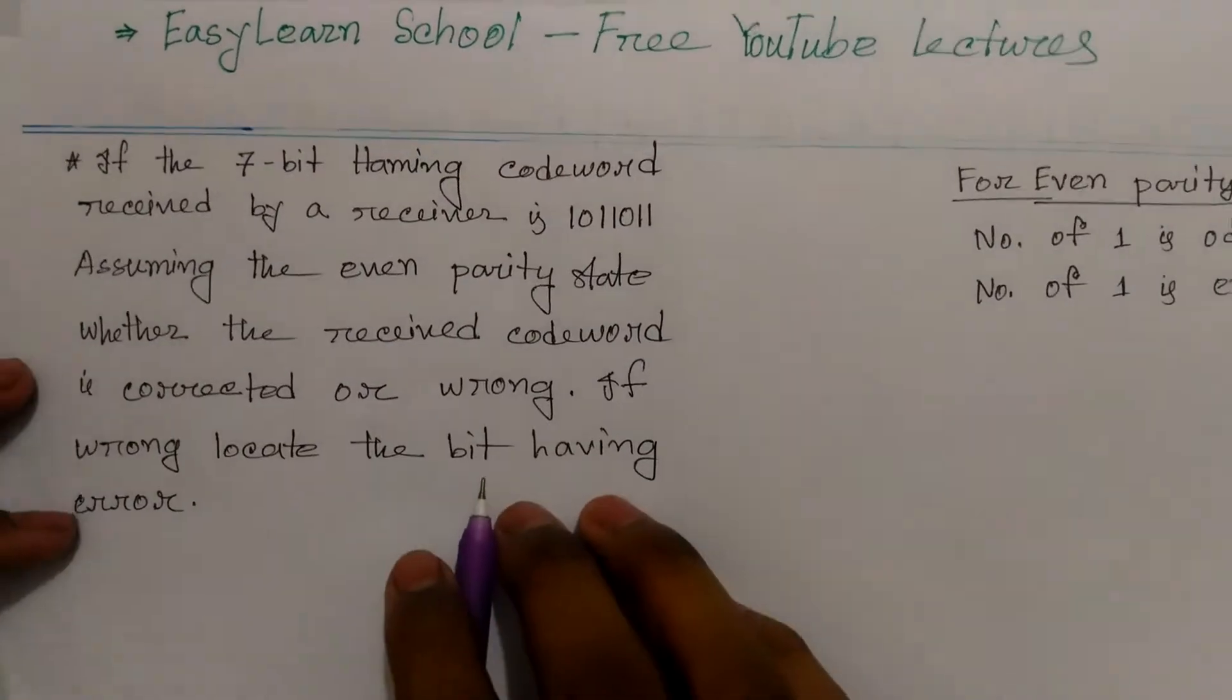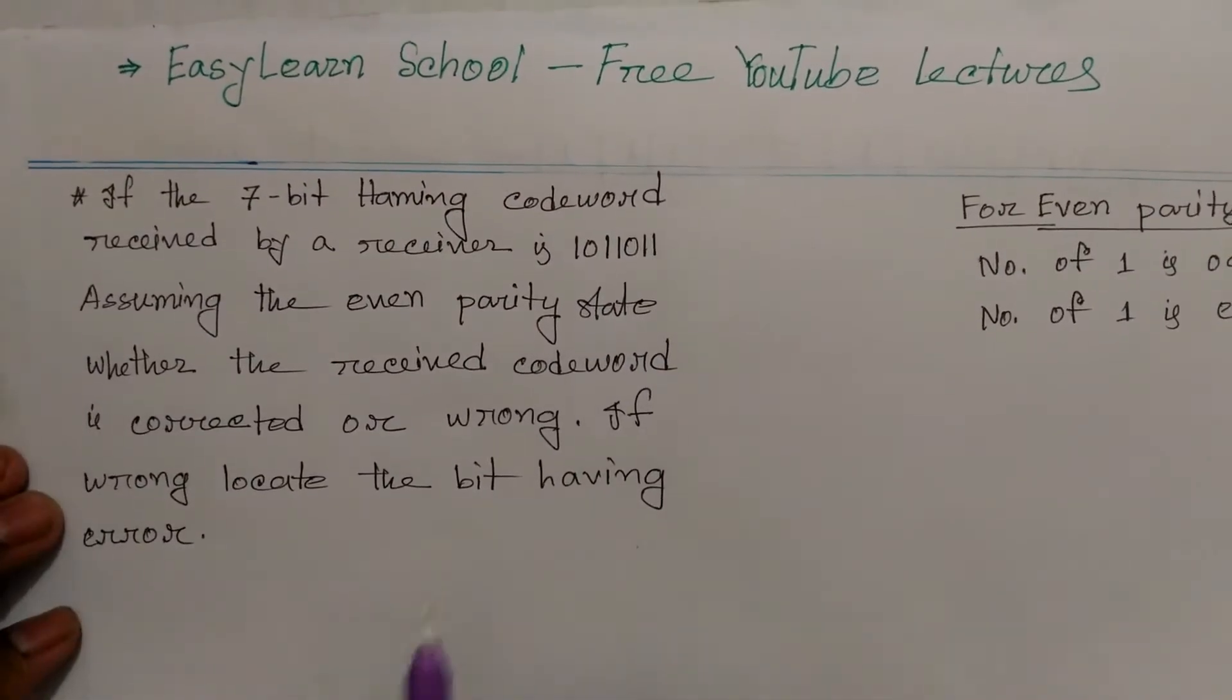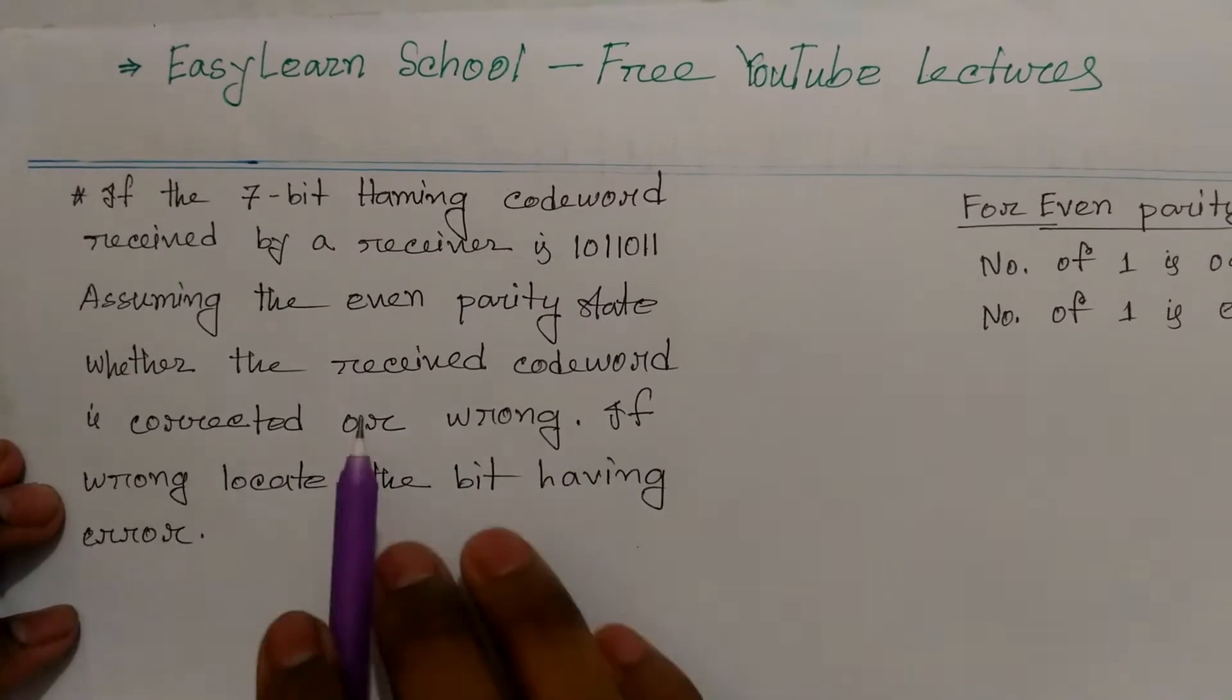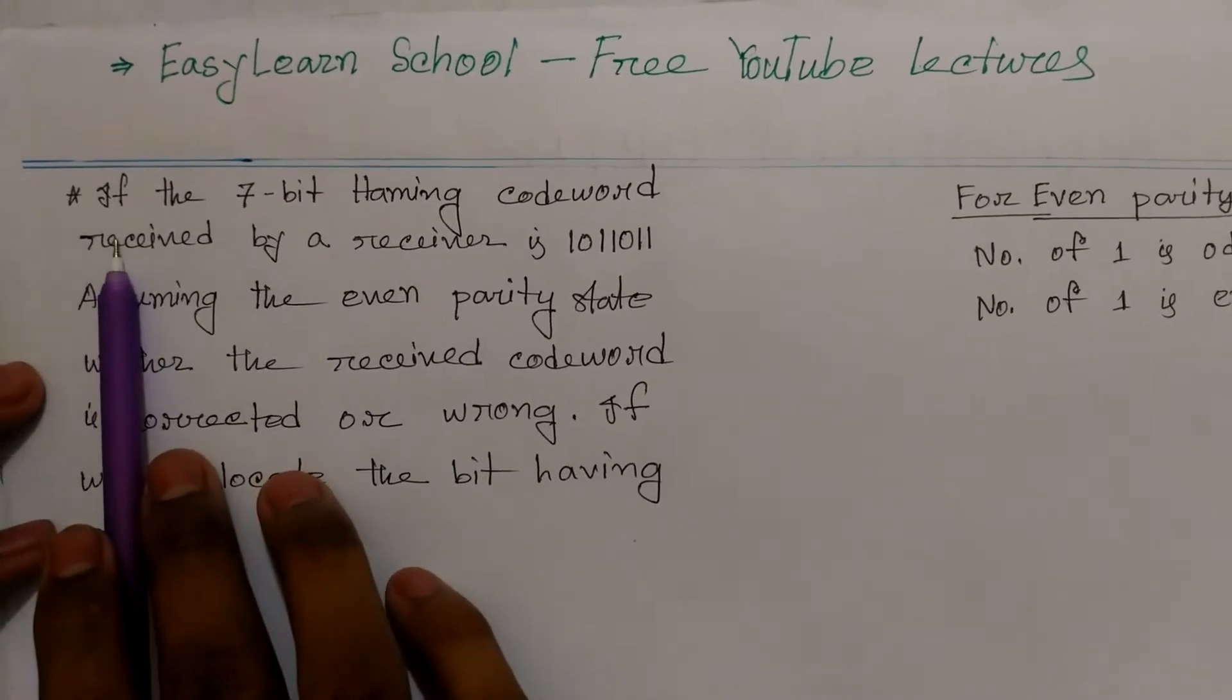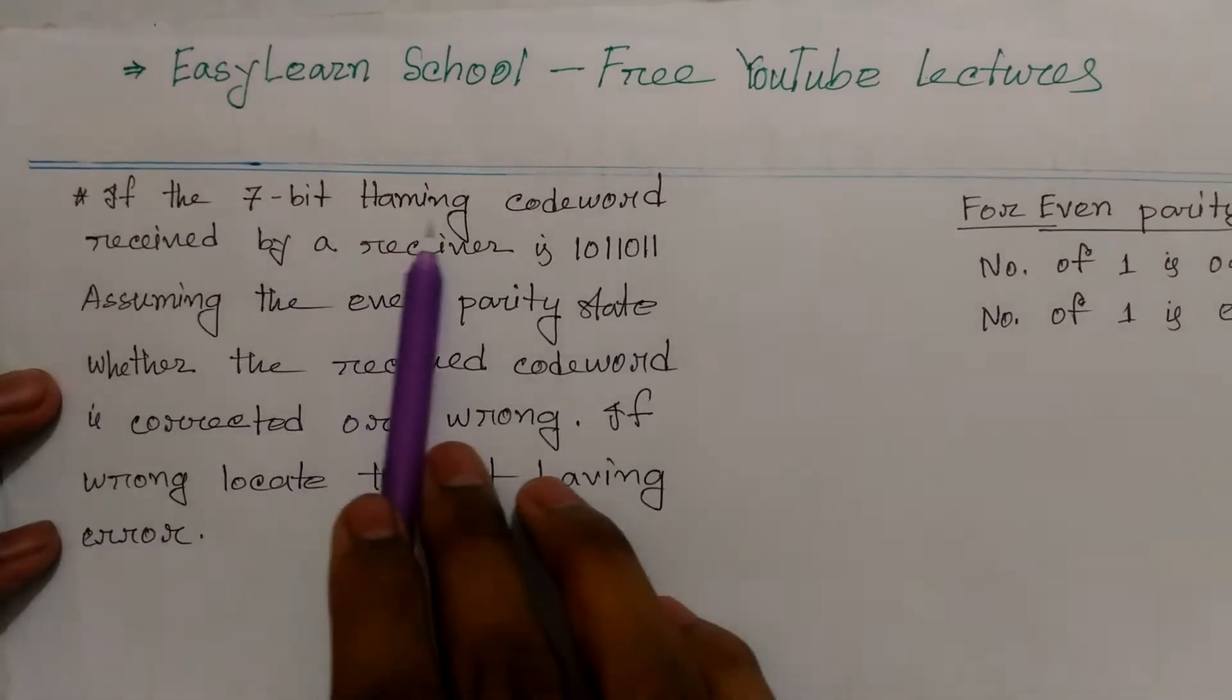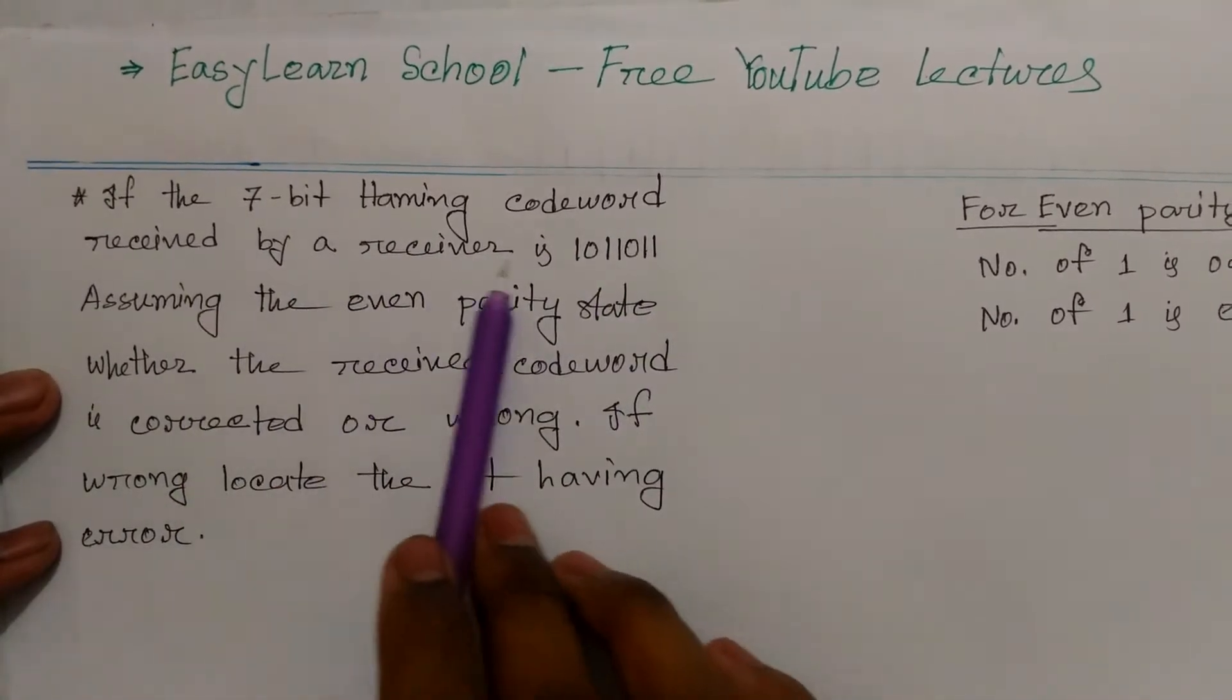Hello viewers! We are going to look at the Hamming code collection. Let's see. This is the 7-bit Hamming codeword received by the receiver.